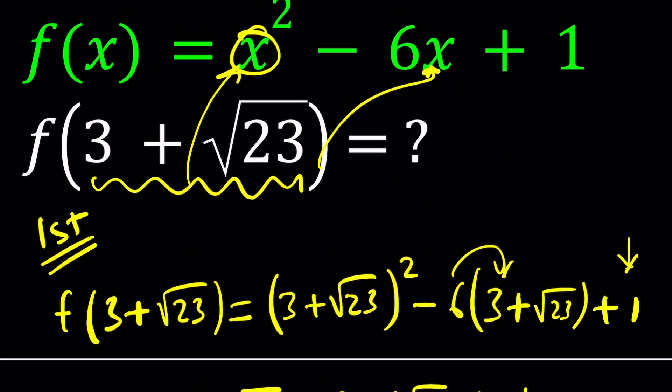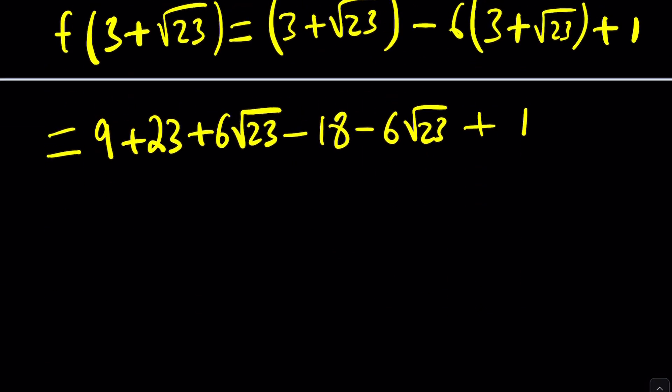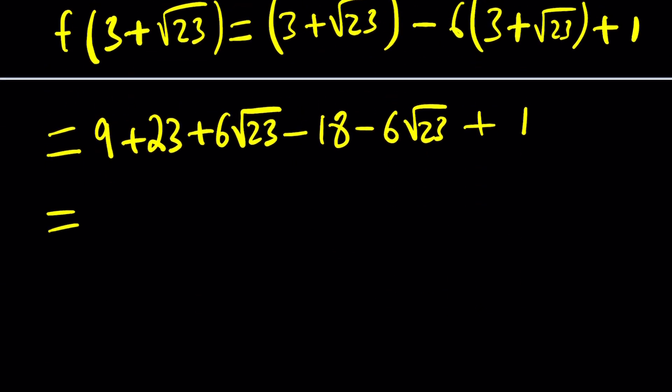So what we did was replaced x with 3 plus root 23 on both sides, because that's how we evaluate functions. Let's go ahead and simplify this. If you simplify this a little bit, you're going to get the 6 root 23 is going to cancel out. This is 32 minus 17, or you can do minus 18 and then plus 1, same idea. This will be 14 plus 1 is going to be 15.